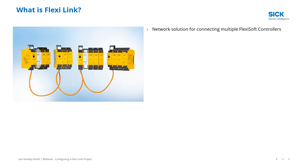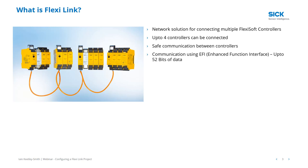So what is FlexiLink? FlexiLink is basically a network solution for connecting multiple FlexiSofts together. In the image on the left you can see four FlexiSoft configurations. The first one shows a CPU, a diagnostic card which is grey, and two SafeIO cards, connected using an orange cable. You can have up to four controllers connected in this way, with safe communication using EFI — Enhanced Function Interface — which allows us to safely send 52 bits of data between each controller. Think of a bit as a light switch — so 52 light switches we can switch on and off.